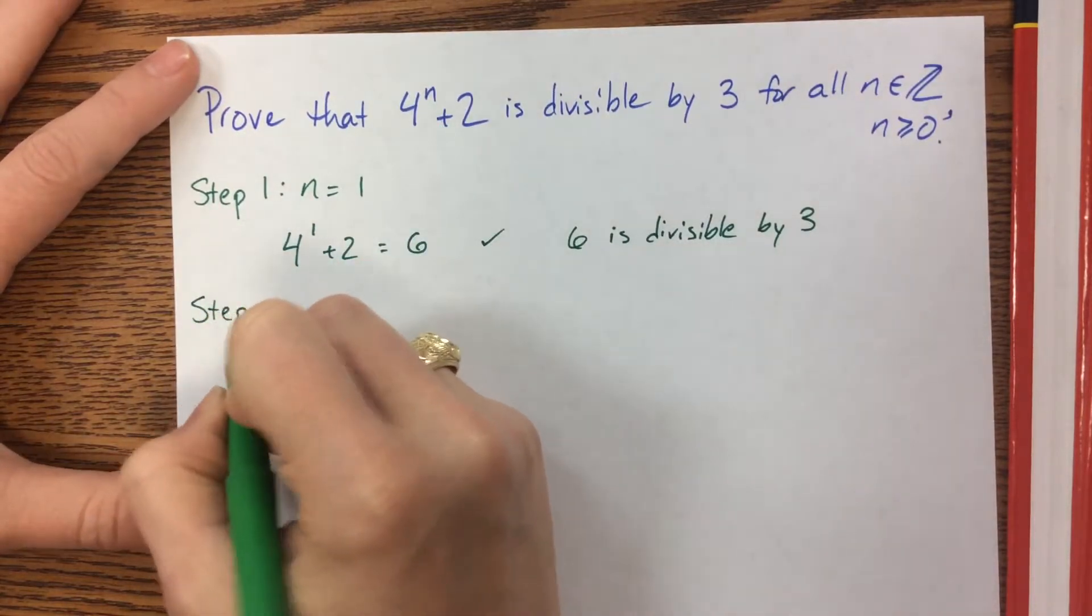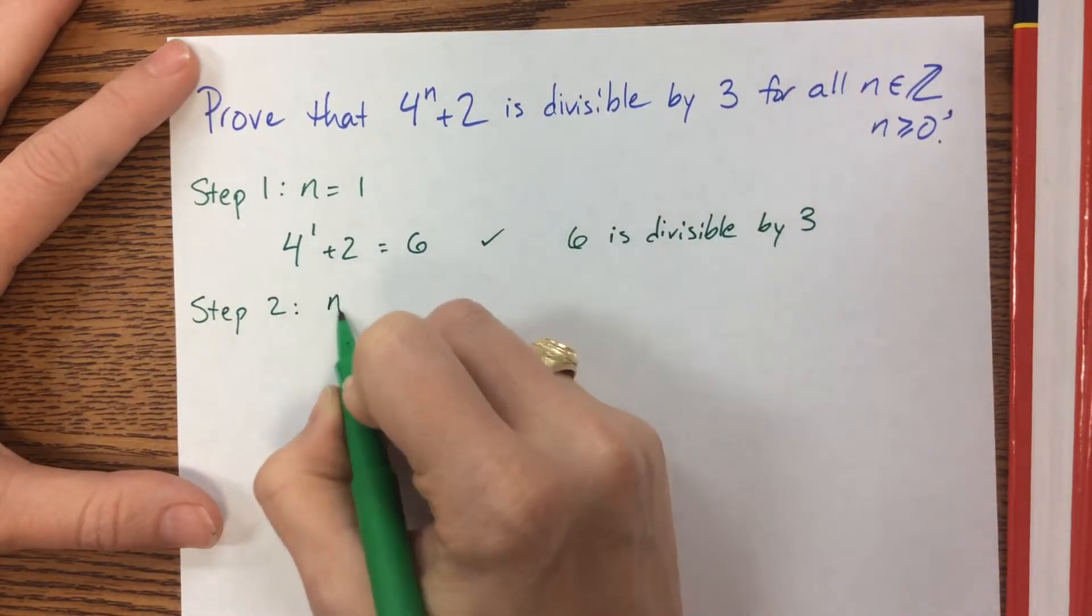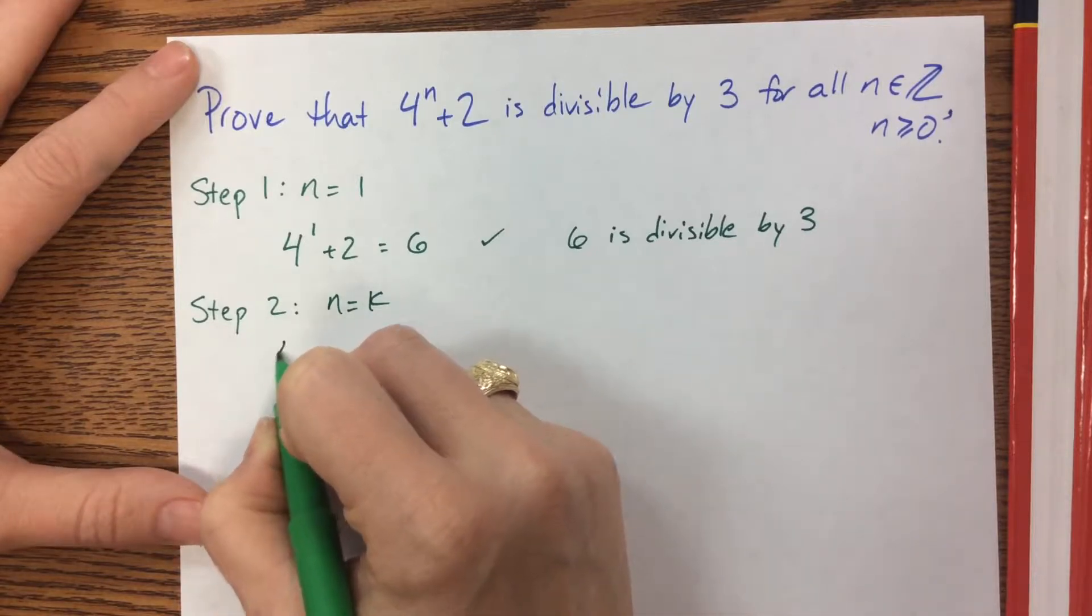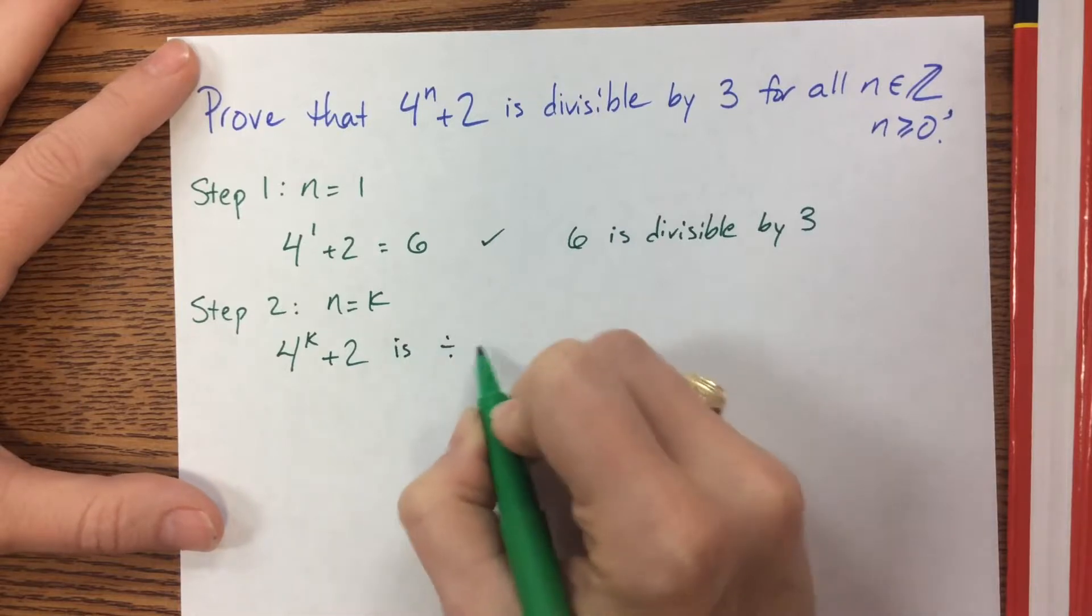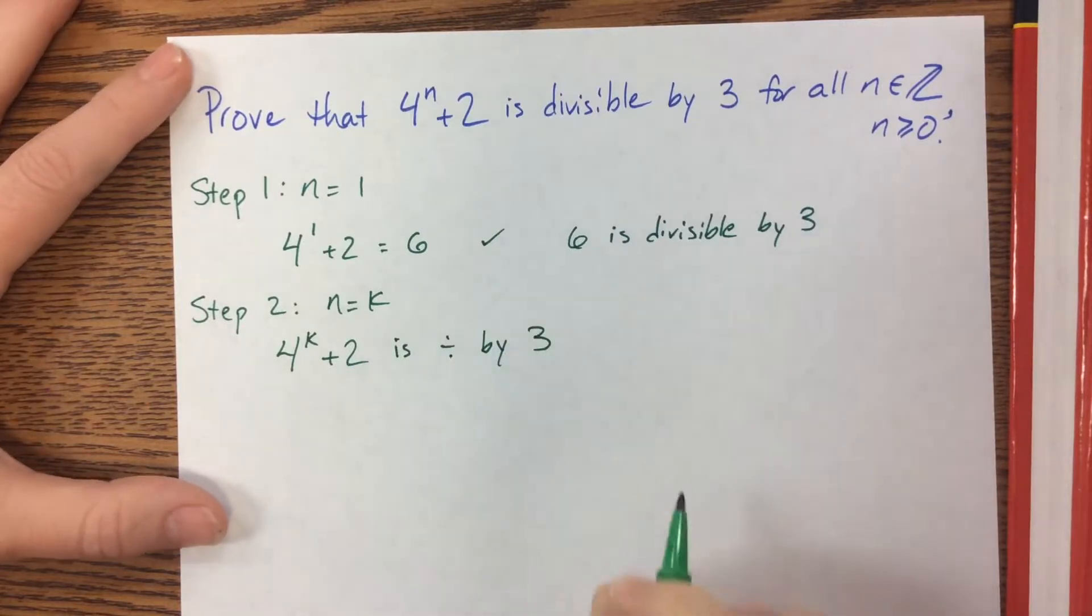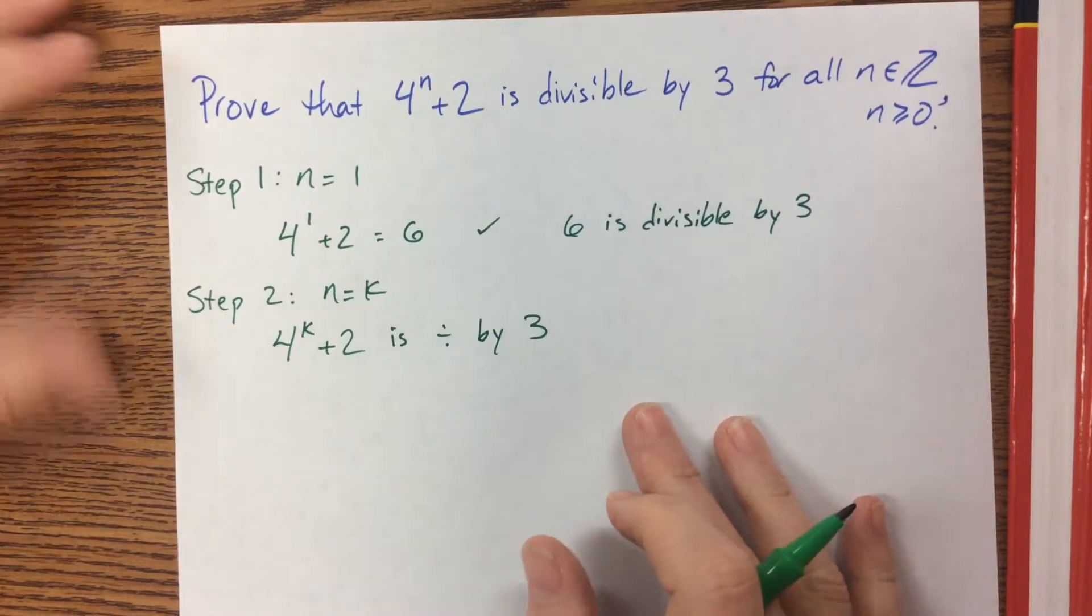Step two, we will assume n equals k is true. So we're going to say that 4 to the k plus 2 is divisible by 3. That's my step 2.